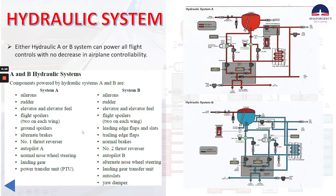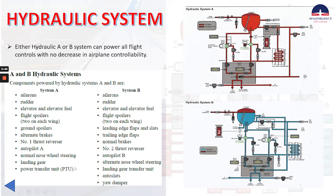Here you can see a list of the components powered by hydraulic system A: ailerons, rudder, elevator and elevator feel, flight spoilers 2 on each wing, ground spoilers, alternate brakes, number one thrust reverser, autopilot A, normal nose wheel steering, landing gear, and the power transfer unit PTU, which we will be talking about later.